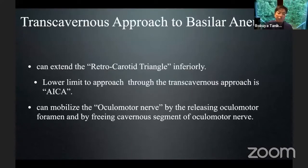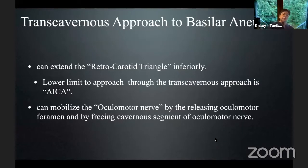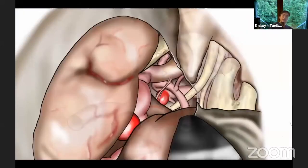Next, I'll show you a trans-cavernous approach to a basilar aneurysm. We can extend the retrocavernous triangle inferiorly, mainly in the trans-cavernous approach. The lower limit of this approach is the IPA. We can mobilize the oculomotor nerve by releasing the oculomotor filament and by freeing the cavernous segment of the oculomotor nerve. This drawing of the trans-cavernous approach was drawn by my colleague Kusumoto.